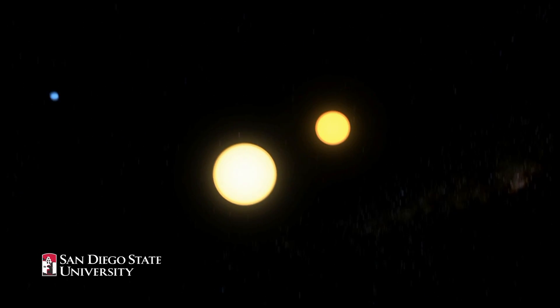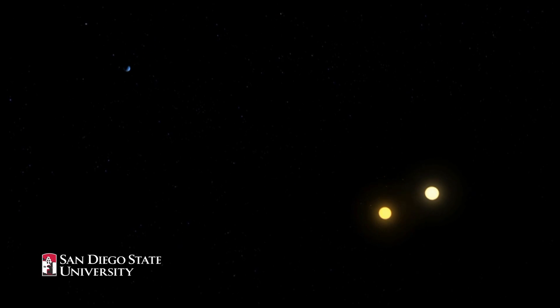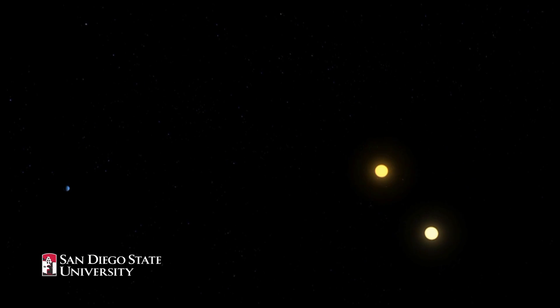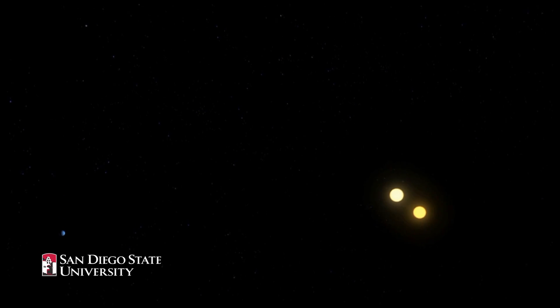We'll now zoom up again for another bird's eye view to see what the system looks like. Again, notice the stars are not on circular orbits. This is quite different than a previous circumbinary planet, Kepler-16. These are very elliptical orbits.